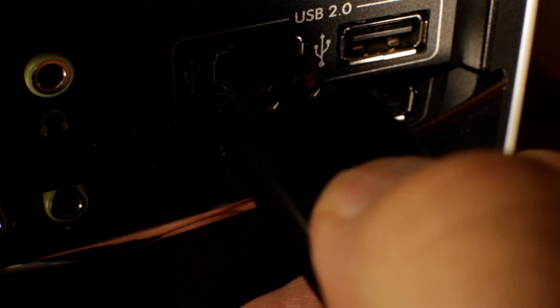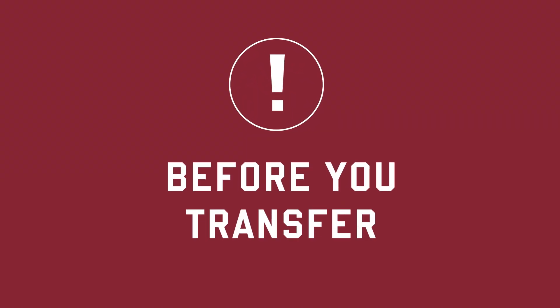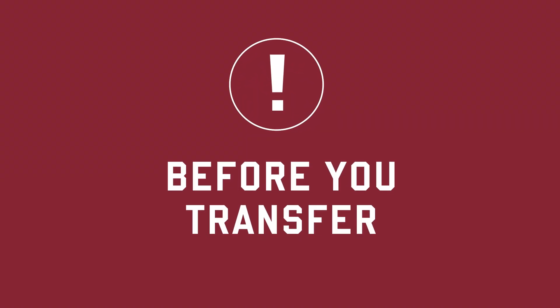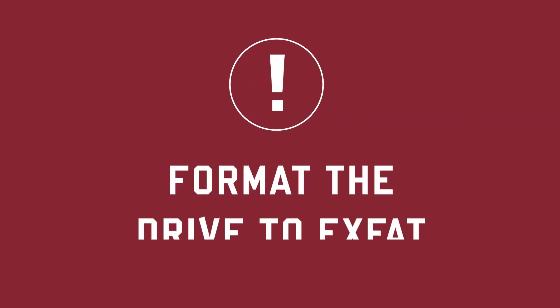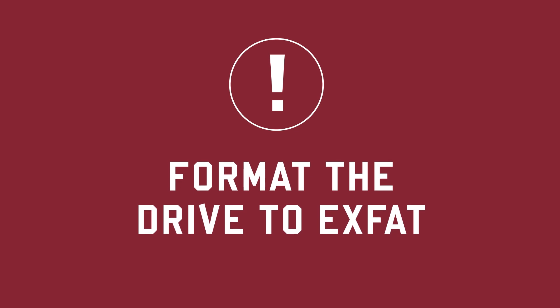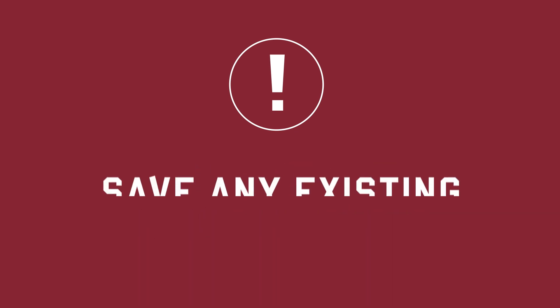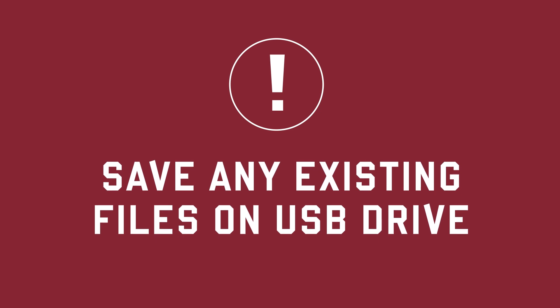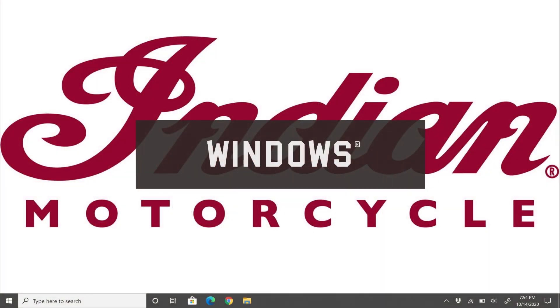Plug the USB drive into your computer. Before transferring the file from your computer to the USB drive, you'll need to make sure the USB drive is formatted to exFAT. Before you format the drive, be sure to save any existing files that are on the USB drive to a different location, as they will be deleted when you format the drive.